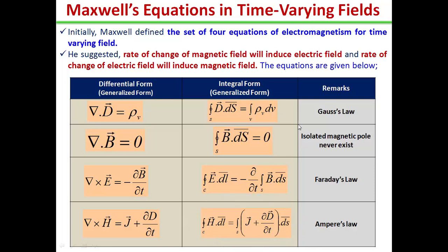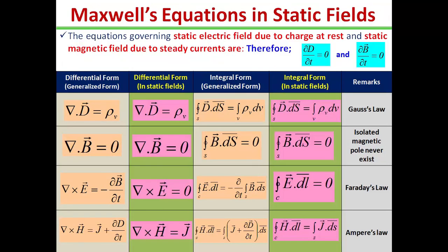All these four equations are defined in the generalized form, and later on we will discuss these equations for various regions. So initially I have taken the Maxwell equations in the static field. If the field is static, then there is no change in the electric field with time, and there will also be no change in the magnetic field with time.